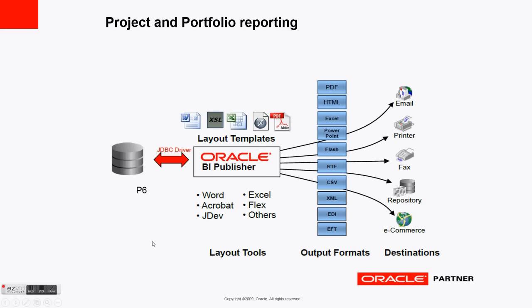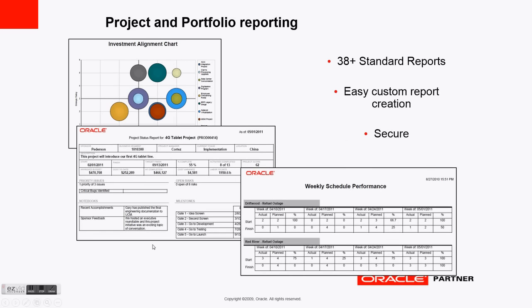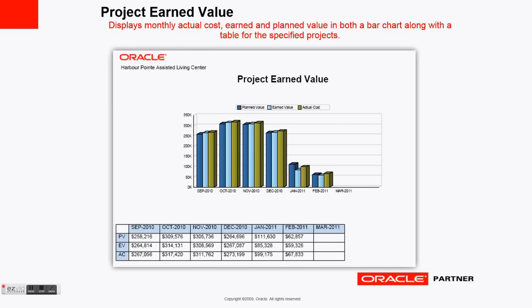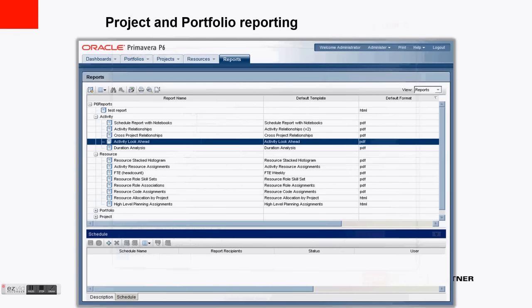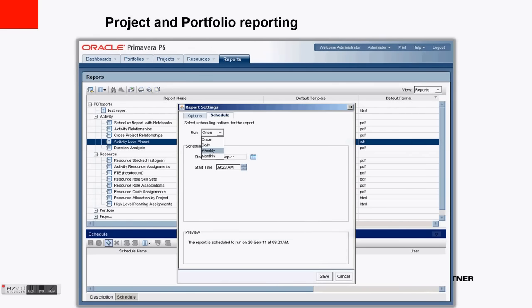Oracle Primavera P6 comes with Oracle's Business Intelligence Publisher, including 38 standard out-of-the-box reports. It allows reporting at the portfolio level, project level, and down to the detailed level, including earned value reporting. You can also automate reports by scheduling them to run weekly and email your distribution list.